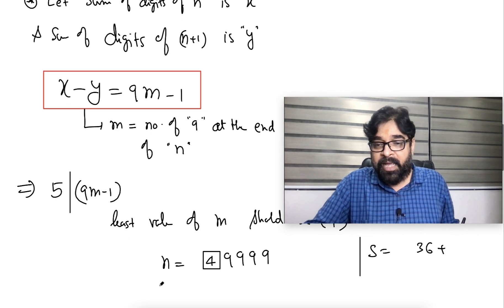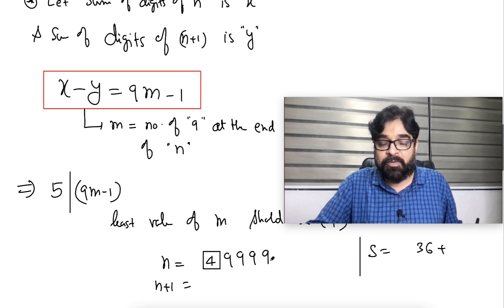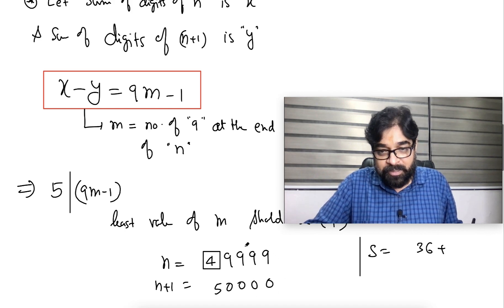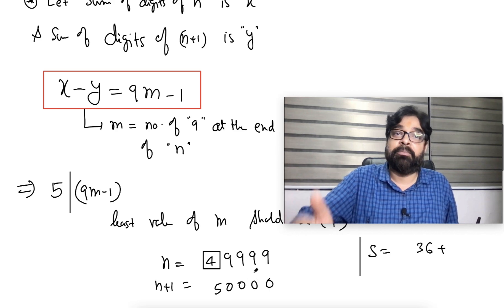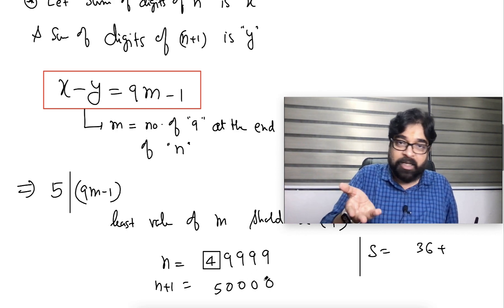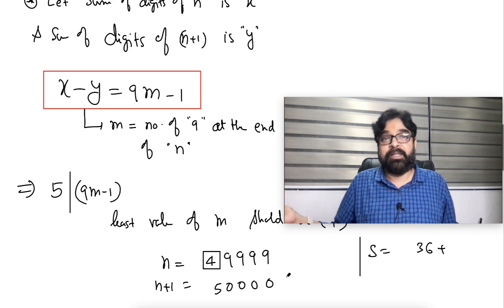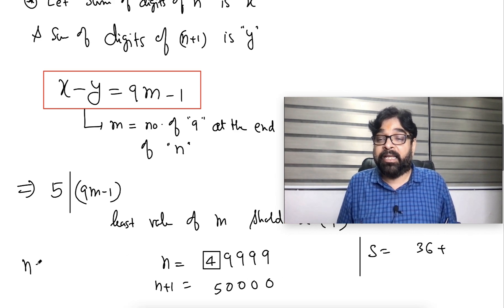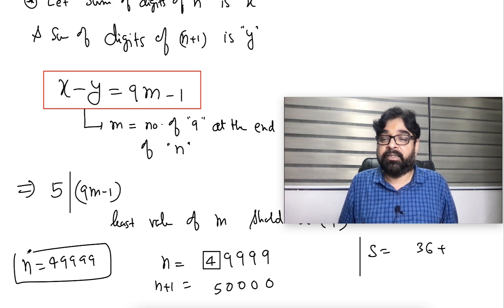Let us verify. n+1 will be what? n+1, 1 added, 50000. This is also divisible by 5. This is also divisible by 5. And difference of this will be already 36 minus 1, 35, divisible by 5. Everything perfect. So we will say our number is, our number n equal to 49999, 4 times 9. This is the number. This is our answer.